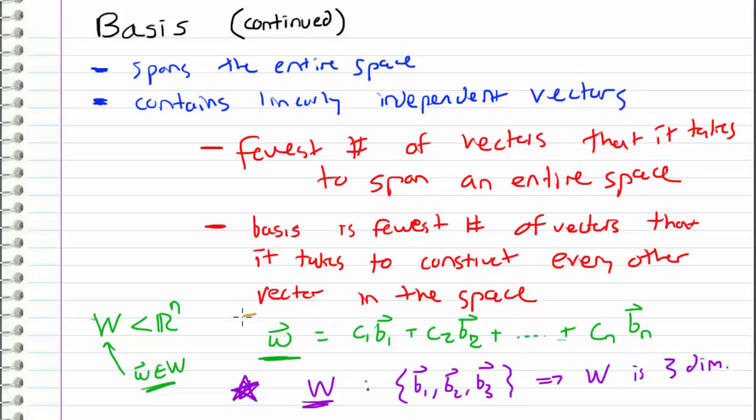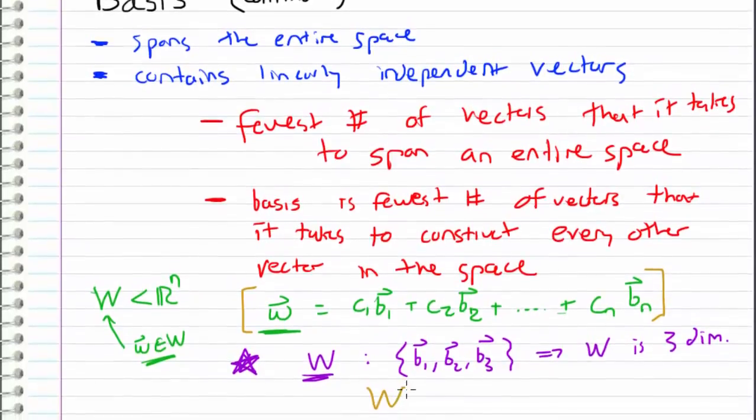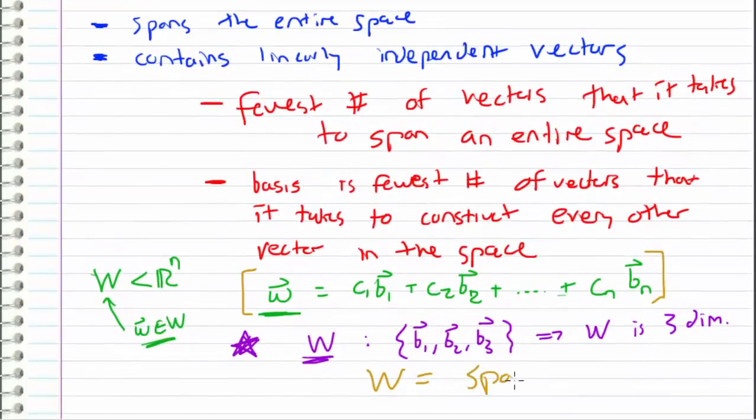And the other thing that we can say because of this fact is that W is equal to the span of our basis vectors. So in this case, if we are considering a basis for W being B1, B2, and B3, then we know that our space W is equal to the span of B1, B2, and B3. And that's because, once again, every single vector in W can be represented as linear combinations of our basis vectors.